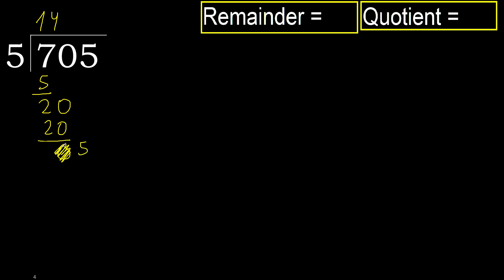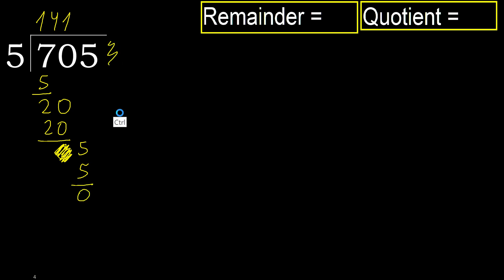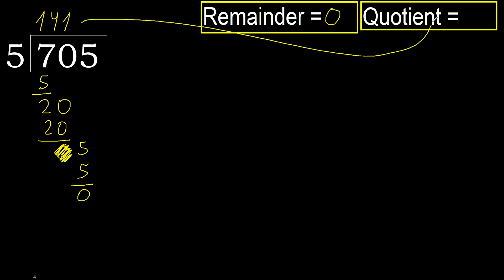Eliminate the 0 on this side. Bring down 5. 5 multiplied by 1 is 5, it is not greater. Subtract. That is not a number, therefore finish it. 705 divided by 5 is 141.